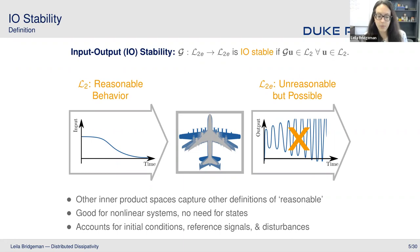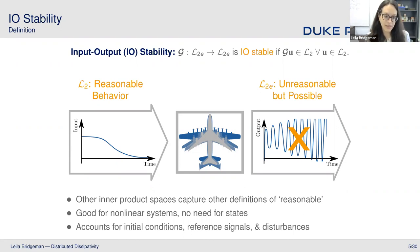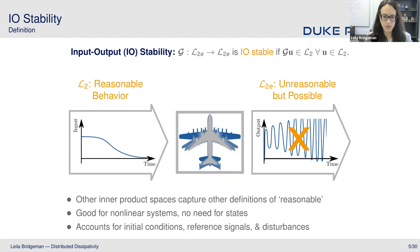The key thing about input-output stability is that it's really a property we can analyze for both linear and nonlinear systems — we don't even need a notion of the state, just how our system maps inputs to outputs. For instance, for neural networks, which don't really have state space realizations, this is a pretty good stability notion, whereas Lyapunov and asymptotic stability are usually associated with state space realizations. Input-output stability can also account for initial conditions, reference signals, and disturbances all at once, making it a versatile one-stop shop for a broad array of systems.